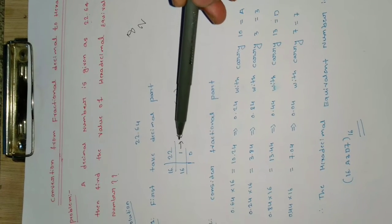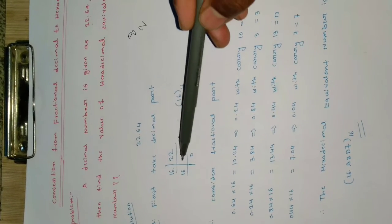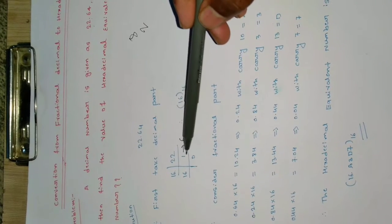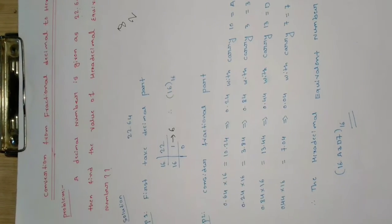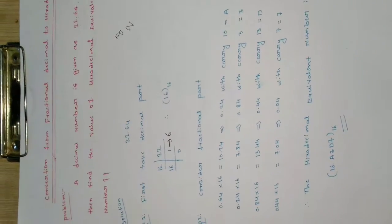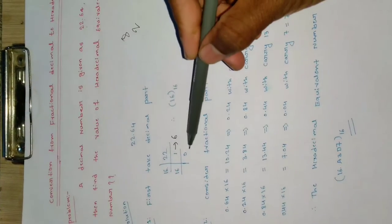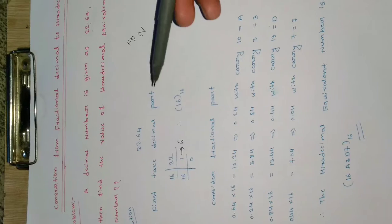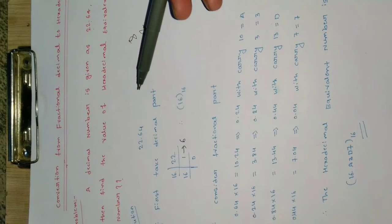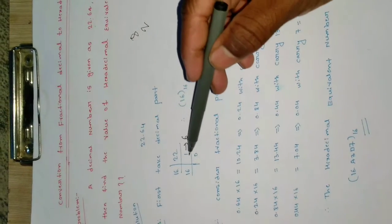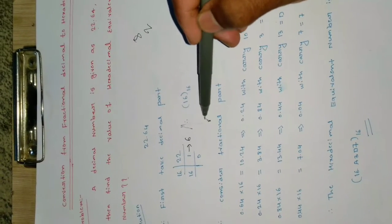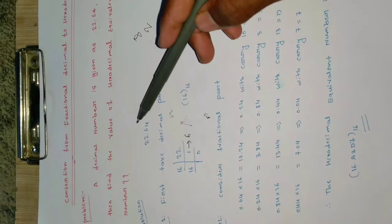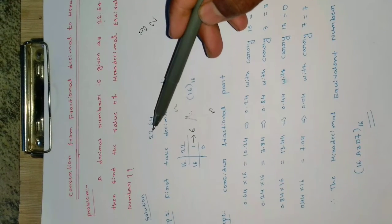22 minus 16 equals 6, so the remainder is 6. In the next step, divide the quotient 1 by 16 — since 1 is less than 16 it is not further divisible, so we write 0. The hexadecimal equivalent of 22 is 16 (reading MSB to LSB). I have now converted 22 to hexadecimal.